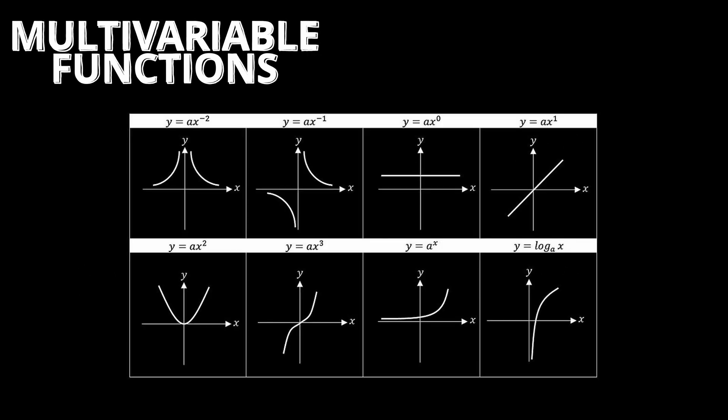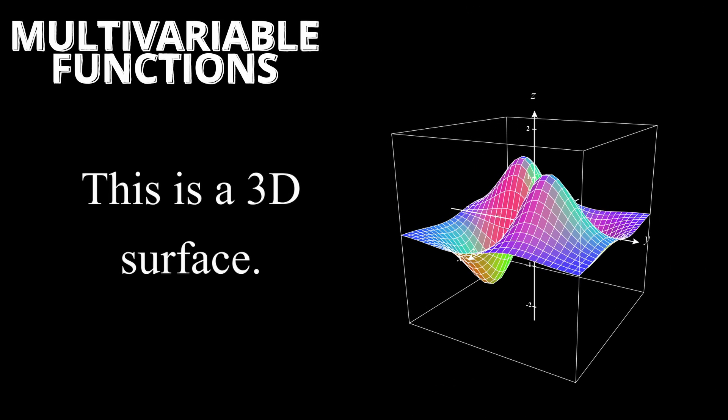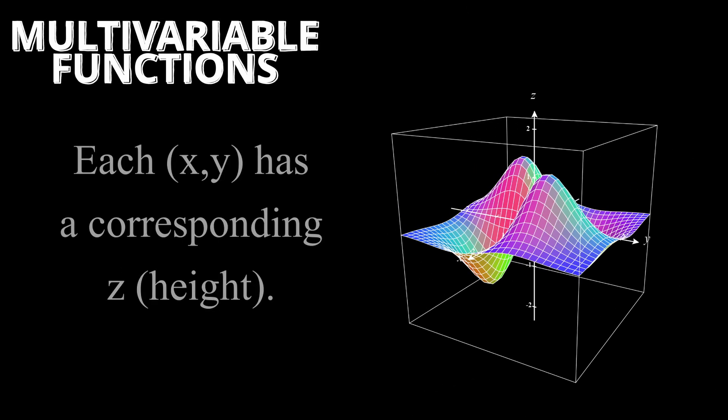When we map all these values out, instead of ending up with a graph like we do in 2D, we end up with a surface in space. All these x and y values have corresponding z values, which creates this shape.